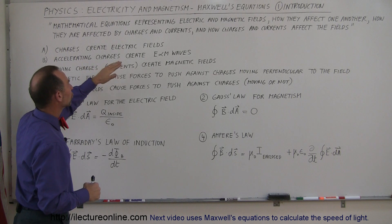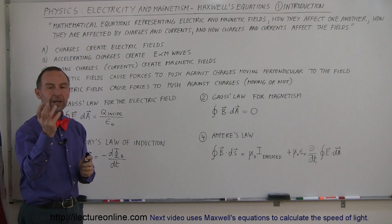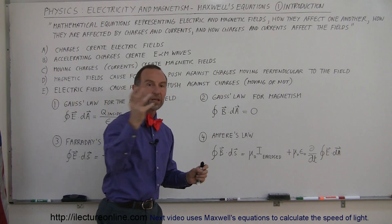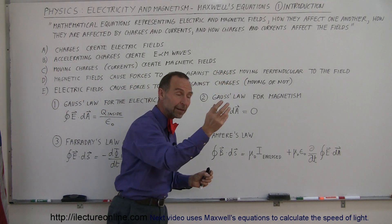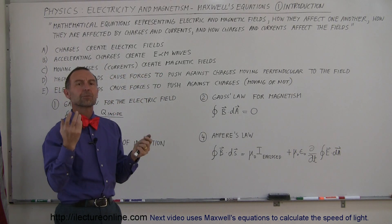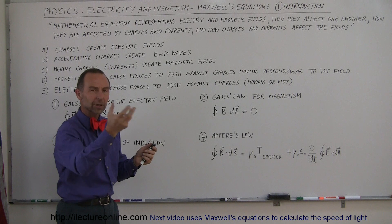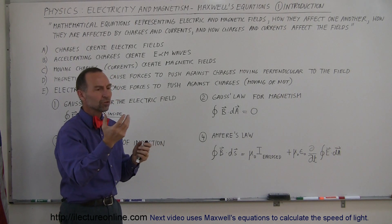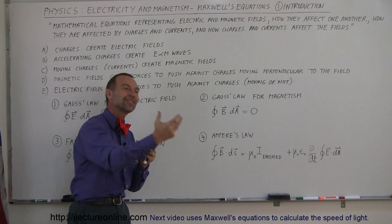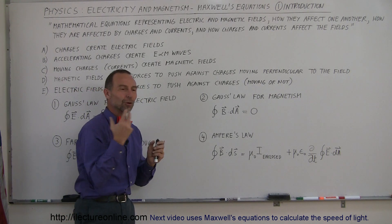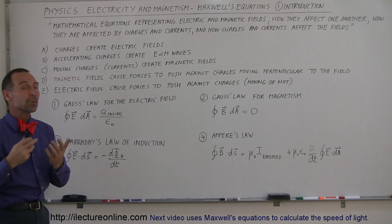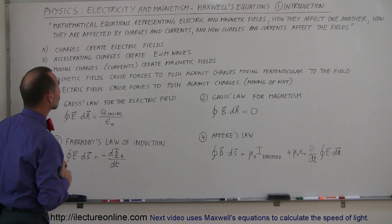Secondly, accelerating charges create electromagnetic waves. Whenever a charge accelerates — speeding up from rest or slowing down from a fast pace — it causes electromagnetic waves. More typically, electromagnetic waves are created by charges moving back and forth in an oscillating fashion, meaning they're constantly accelerating and decelerating. So vibrating charges also cause electromagnetic waves, and that's the primary way in which electromagnetic radiation is produced.